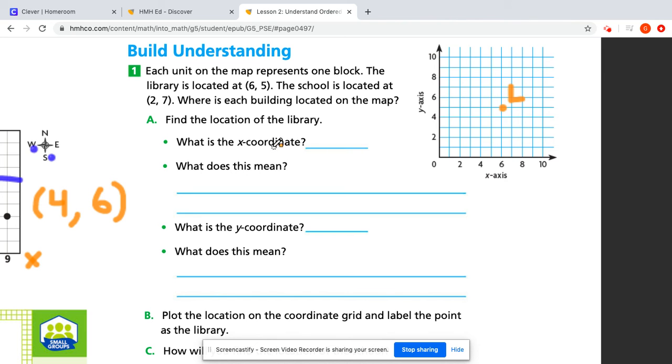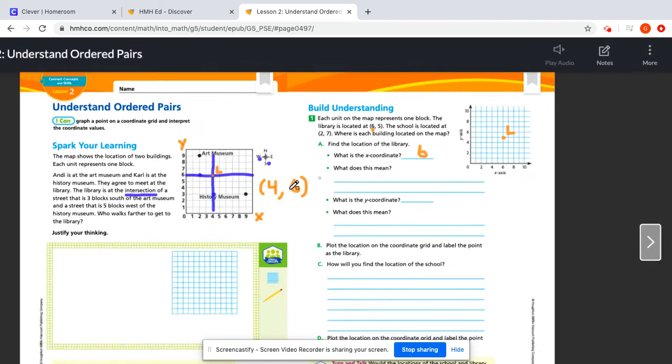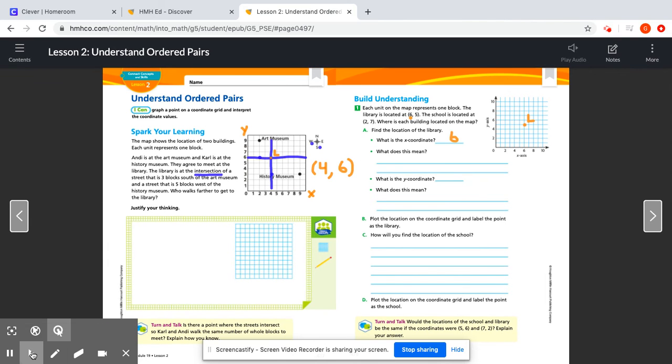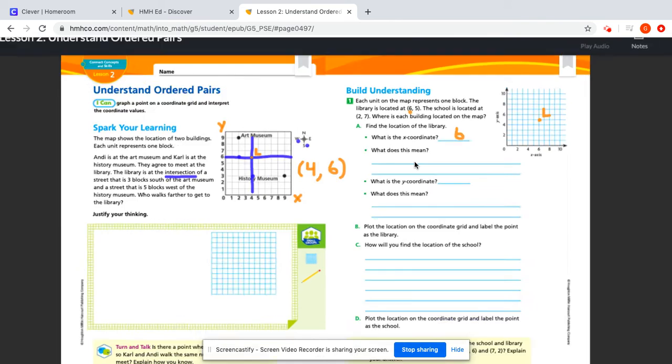So what is the X coordinate of the location of the library? Well, that's six. So what does that mean? It means that it is six blocks away from the Y axis. So that's how we get six. It's one, two, three, four, five, six, six points away from Y.